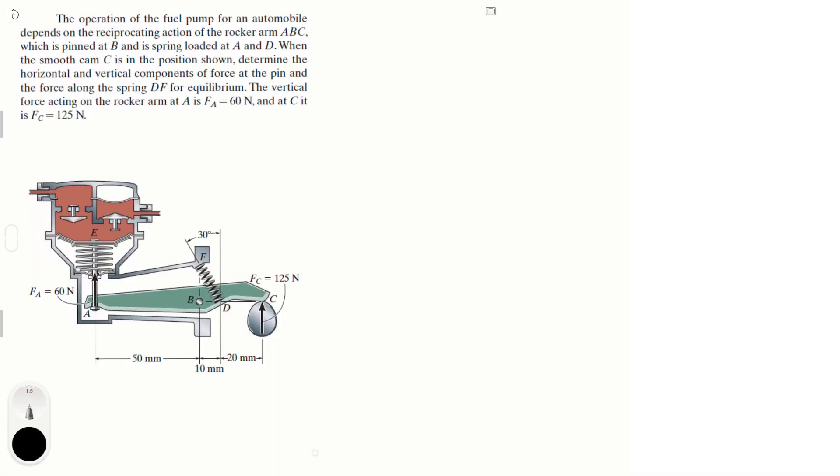Let's look at this problem that says the operation of the fuel pump for an automobile depends on the reciprocating action of the rocker arm ABC, which is pinned at B and is spring loaded at A and D. When the smooth cam is in the position shown,